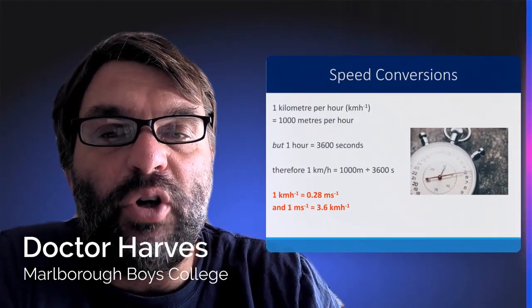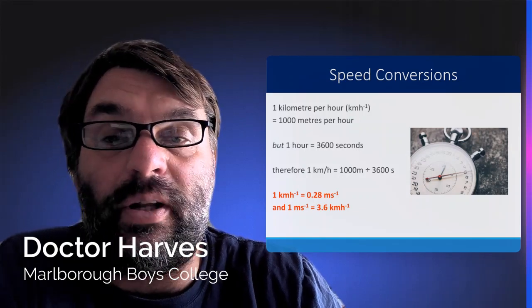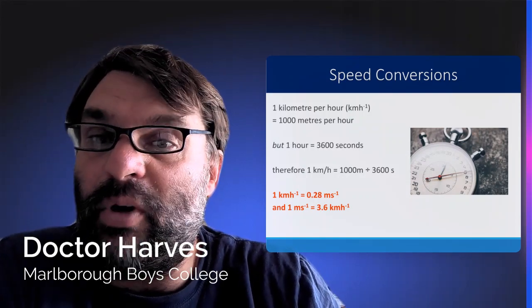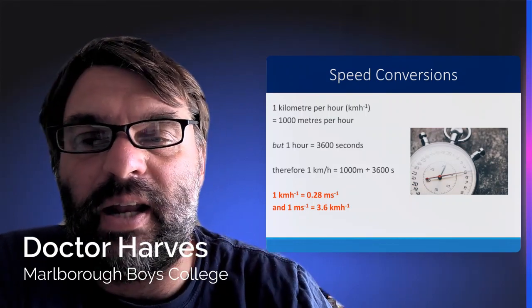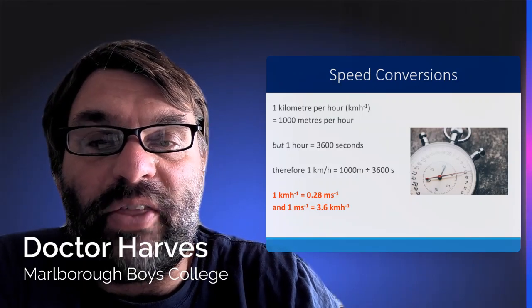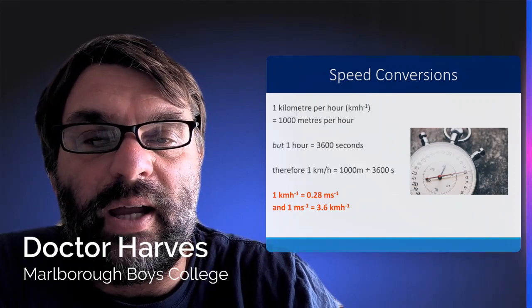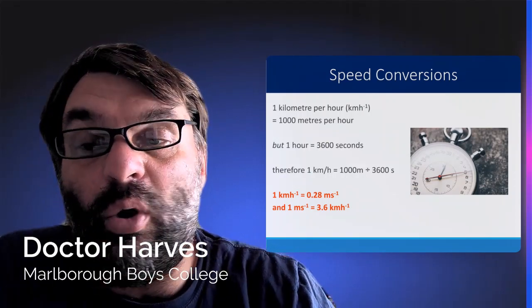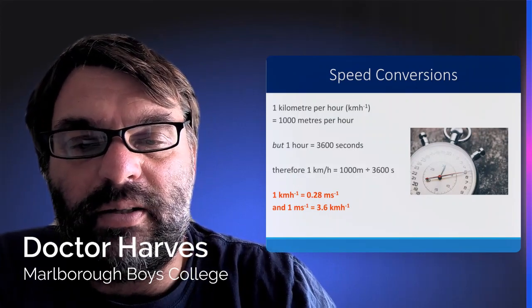So in terms of conversions, 1 km per hour will be 1,000 meters per hour, but remember an hour is 60 seconds times 60 minutes, because it's 60 minutes in an hour and 60 seconds in a minute. Therefore 1 km per hour will be 1,000 divided by 3,600 seconds, or 0.28 meters per second, or conversely, 1 meters per second equals 3.6 kilometers an hour.